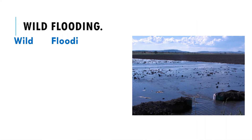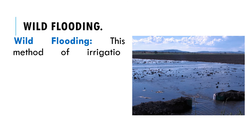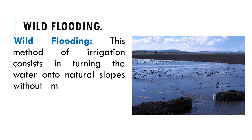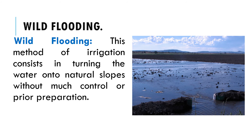Wild flooding consists of turning the water onto natural slopes without much control or prior preparation. It is usually a waste of water, and unless the land is naturally smooth, the resulting irrigation will be quite uneven. Wild flooding is used mainly for pastures and fields of native hay on steep slopes where abundant water is available and crop values do not warrant more expensive preparations.